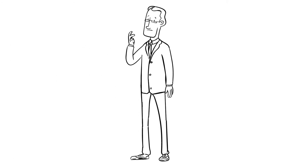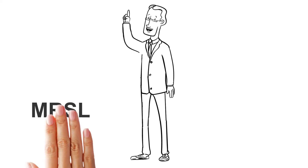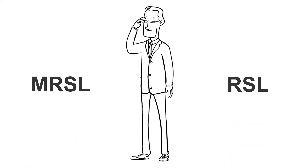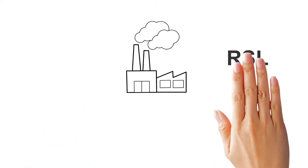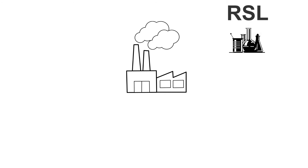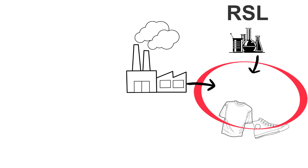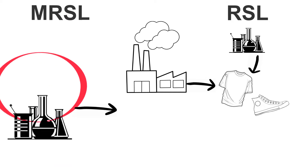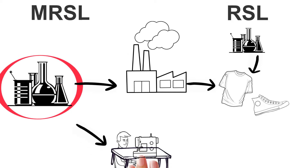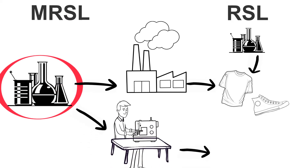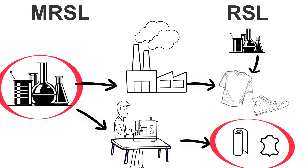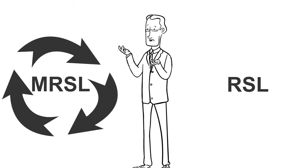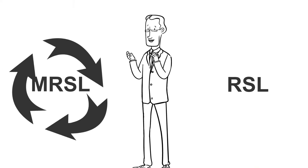First, it's important to understand the difference between an MRSL and an RSL. An RSL limits the chemicals that end up in a finished material or product. An MRSL targets chemicals that are used in the manufacturing process of products, including materials. Therefore, an MRSL is more comprehensive than an RSL.